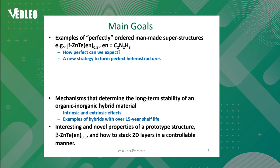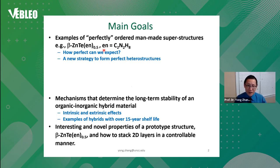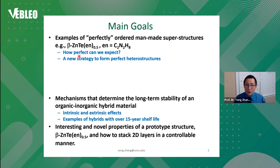First, I want to give you some examples of what we consider perfectly ordered man-made superstructures, such as this one called beta-zinc-telluride-en 1.5, and really how perfect can they be — I'm going to show you. This also gives us a new strategy to form perfect heterostructures.